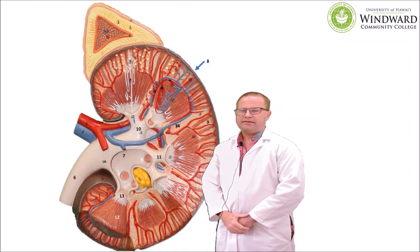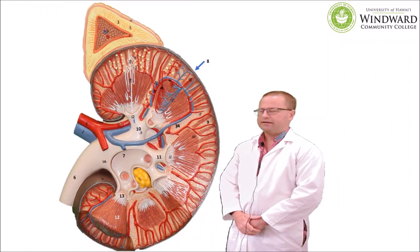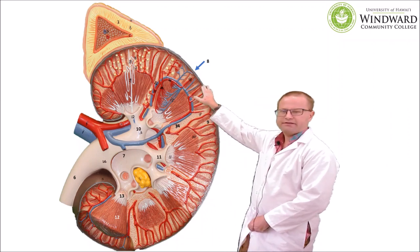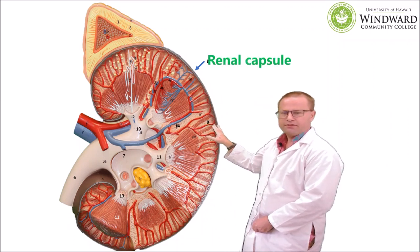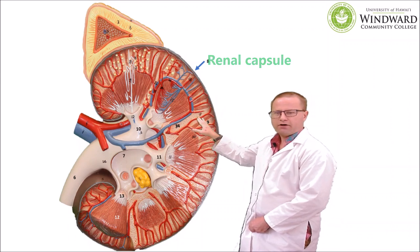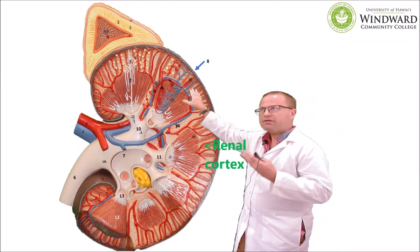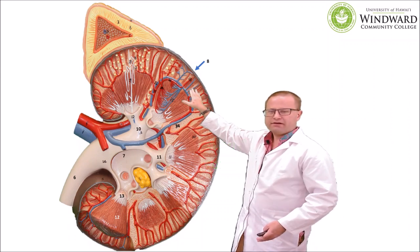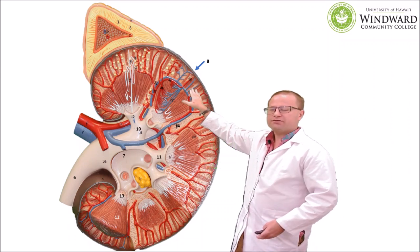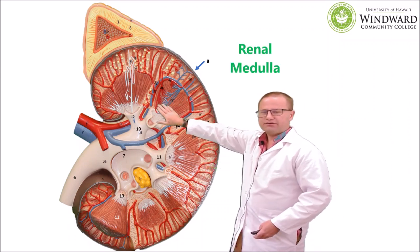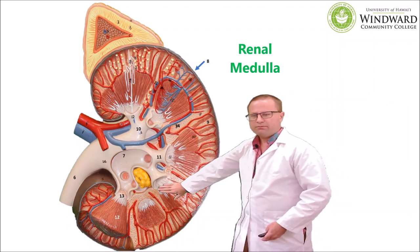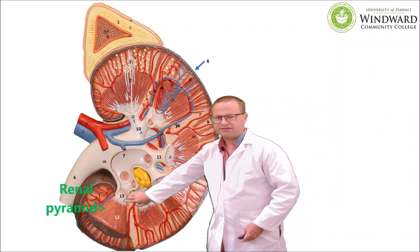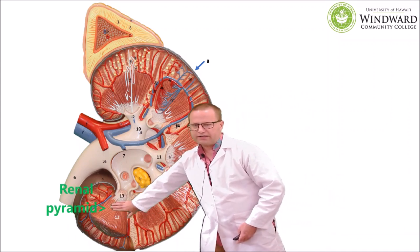Let's take a look at the sagittal section of the kidney. First of all, the kidney is surrounded by a fibrous connective tissue capsule called the renal capsule. Beneath that we have an area called the renal cortex. Remember that the cortex is the outer region of any organ, so we also have a medulla — the renal medulla is the inner region, and it's made up of something called renal pyramids.